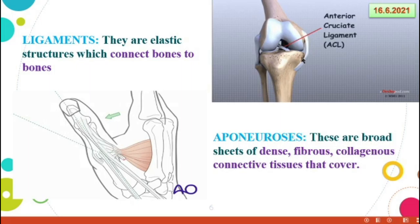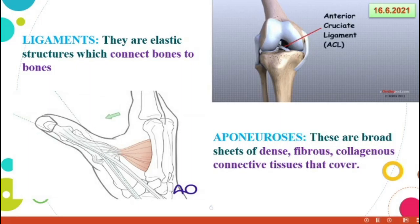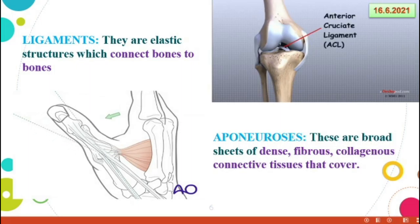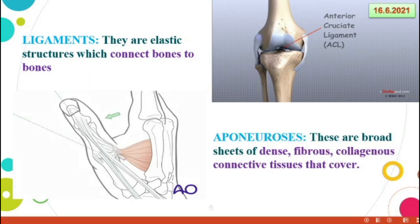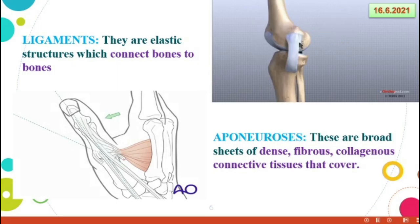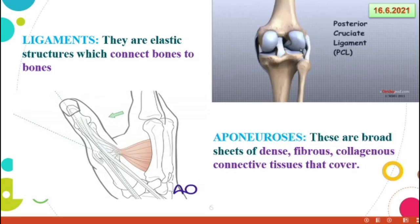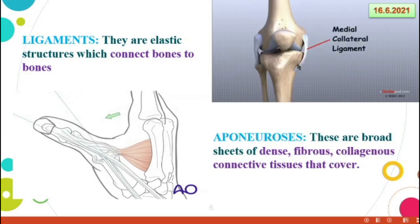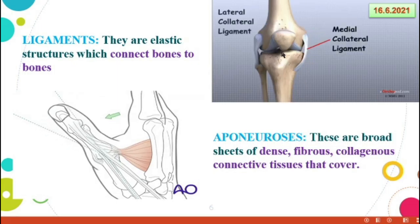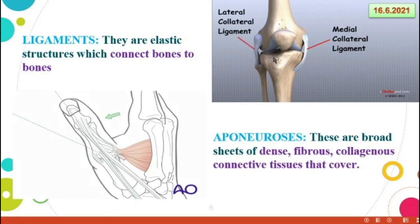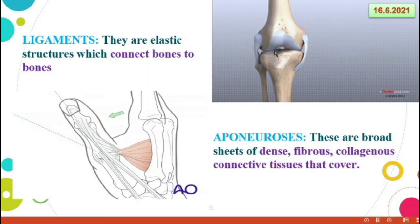After aged people, after 60 or maybe 70, what happens? This ligament may tear, and the bones then directly join. So rupture may happen and pain may occur.